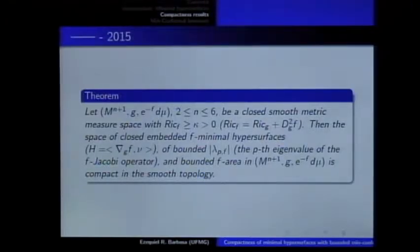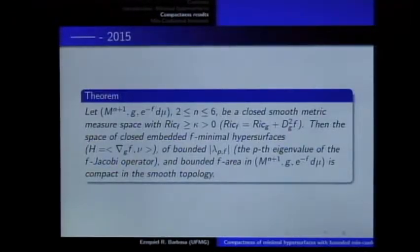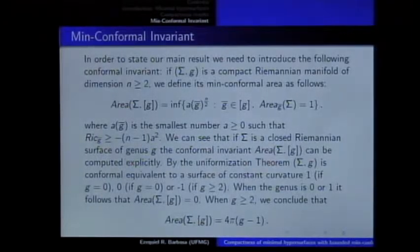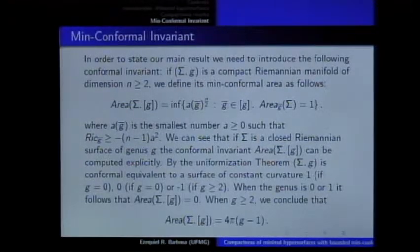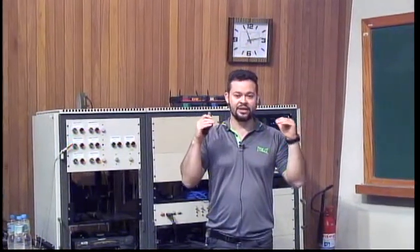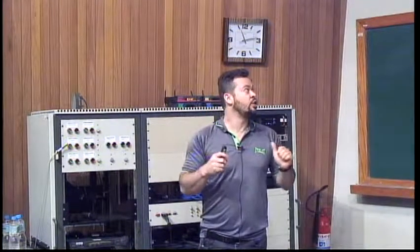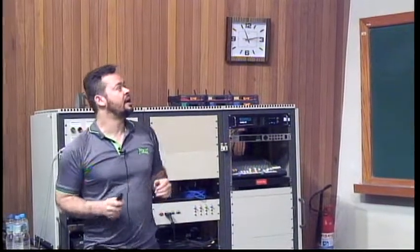Just to be complete, we can prove this kind of compactness result for F-minimal hypersurfaces, considering the same kind of condition on the eigenvalues of the F-Jacobi operator. So the question of how to generalize the Shen-Wang result to high dimensions is somehow still persistent, because Ben Sharp uses the index, but it is interesting to consider something that naturally generalizes the genus and obtain a very clear, specific, natural generalization of the Shen-Wang compactness result.